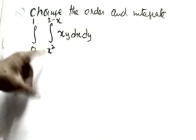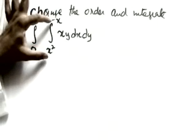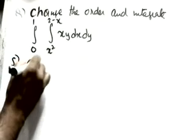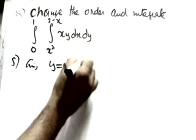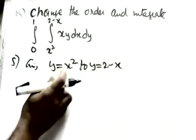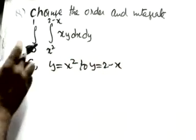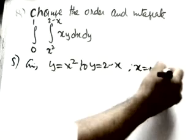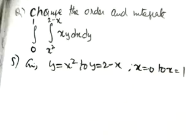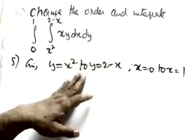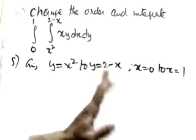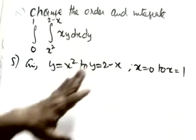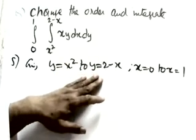These are the given values of x, which means these are the limits of y when x is given. We suppose the limits as y. Given y equals x squared as the lower limit and y equals 2 minus x as the upper limit. These are the values of y and x equals 0 to x equals 1 are the values of x. The y limits are in variables and x limits are in constants, so we have to change x to variables and y to constants.